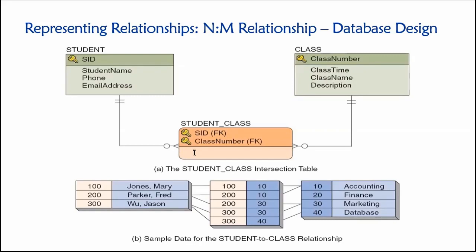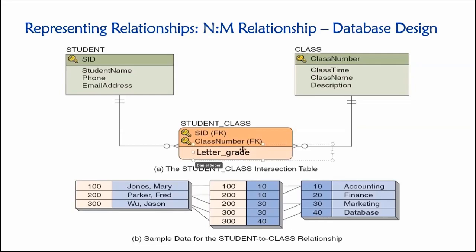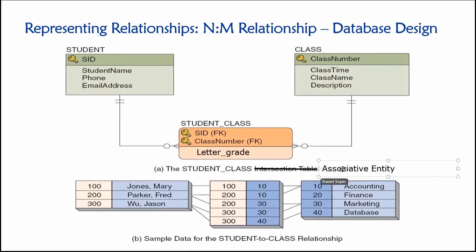But if we have a non-key attribute, then this intersection table qualifies as an associative entity. That's the vocabulary distinction between them. So if I did something similar to what we saw earlier and put a letter grade column in here, now this would be an associative entity. We have an association relationship — not only keeping track of which students took which classes, but also storing an additional piece of information about that relationship: the grade the student earned in the class.